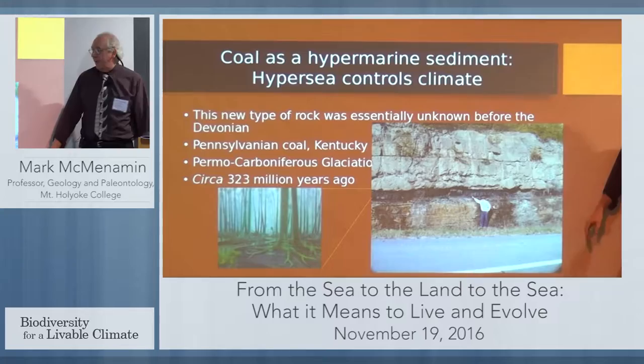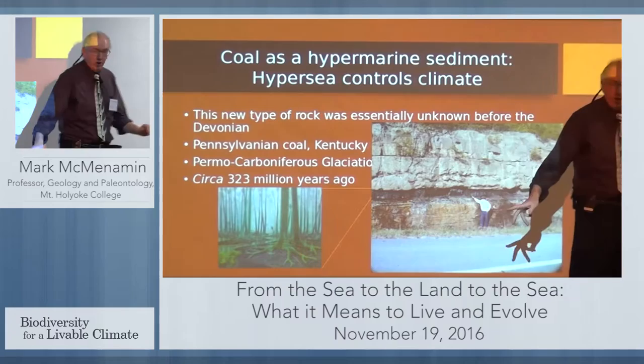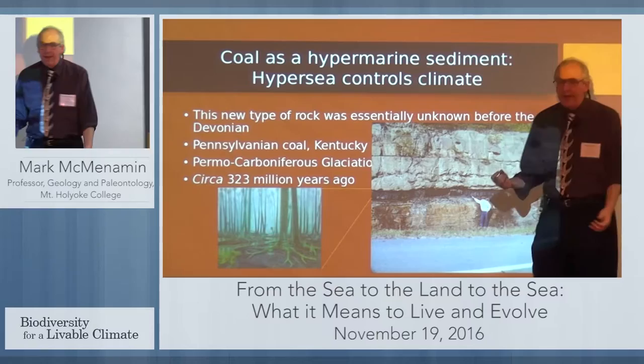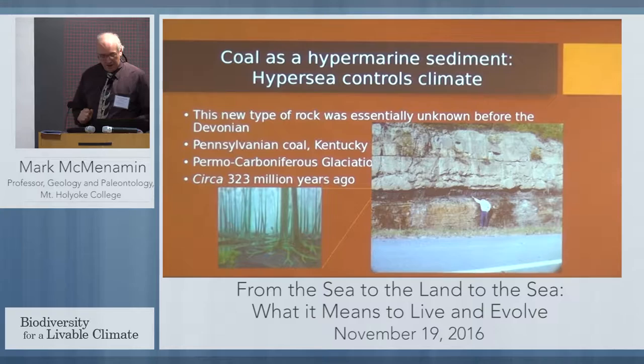This leads to the Permocarboniferous glaciation on the supercontinent of Gondwana. You have ice sheets beginning to form because Hyper-C has been so successful at drawing down atmospheric carbon dioxide levels. This is a very interesting event, and we really need to listen to this lesson from Earth history.